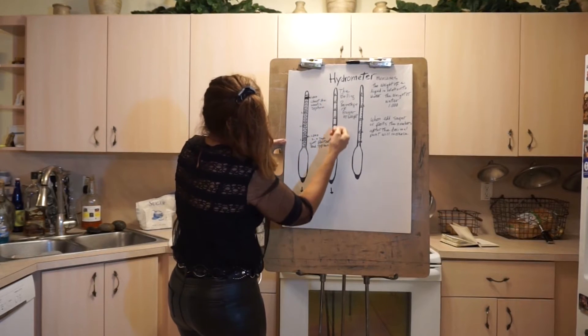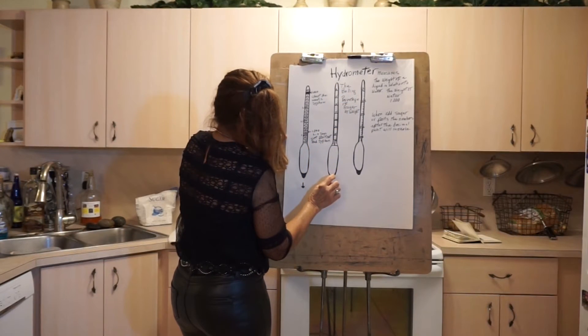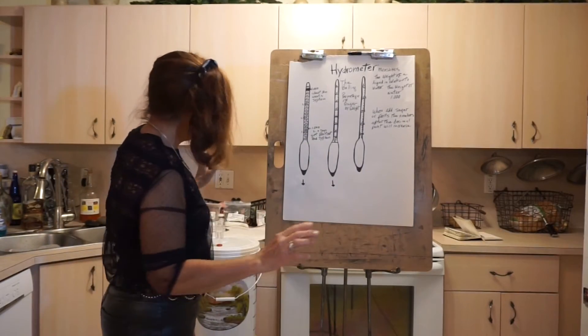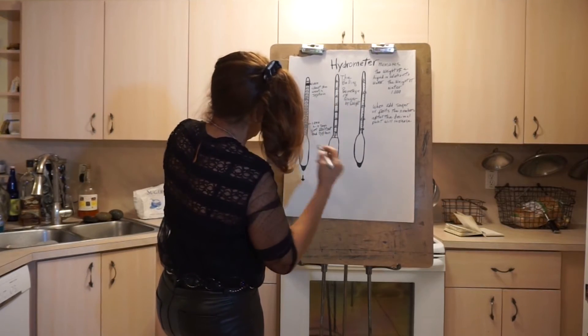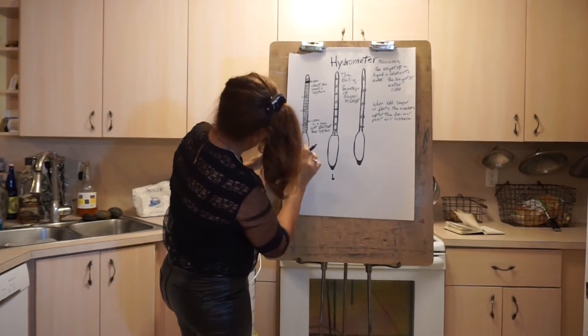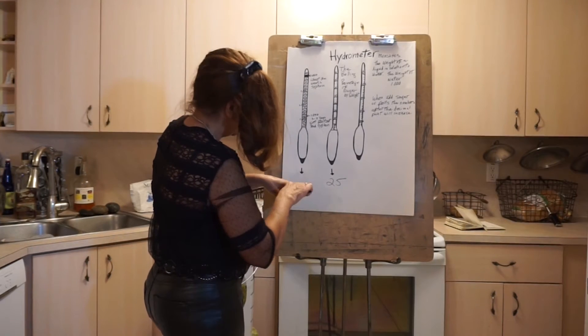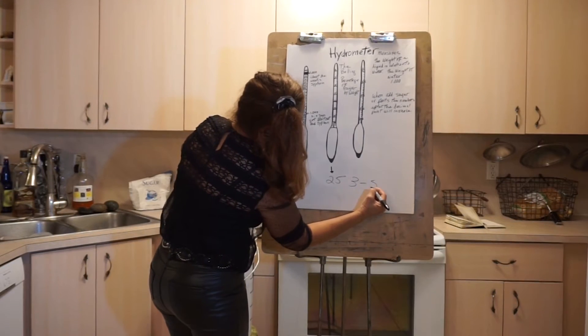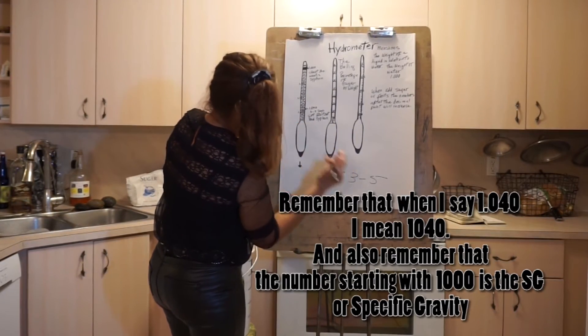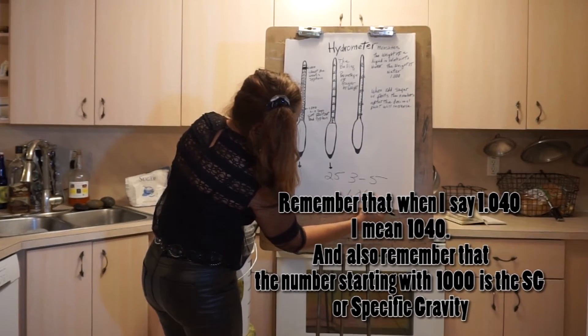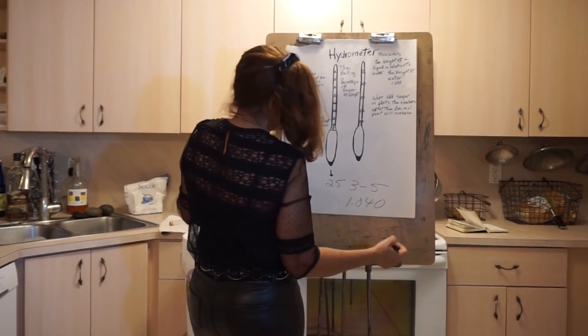Remember the hydrometer scale counts up to down. When everything is well and done, these are the only numbers you're going to use. I started my wine at 25% sugar. So in three to five days I'm going to measure and look for this number 1.040. When it gets to 1.040, that's when I bring the fruits out and strain the wine.